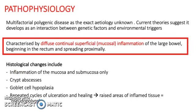For the pathophysiology, it is a multifactorial polygenic disease and the exact etiologies are not fully known. Current theories suggest it develops as an interaction between genetic and environmental factors. It is characterized by diffuse continual superficial inflammation of the large bowel, beginning in the rectum and spreading proximally. Histological changes include inflammation of the mucosa and submucosa only, crypt abscesses, goblet cell hypoplasia, and repeated cycles of ulceration and healing leading to pseudopolyps.